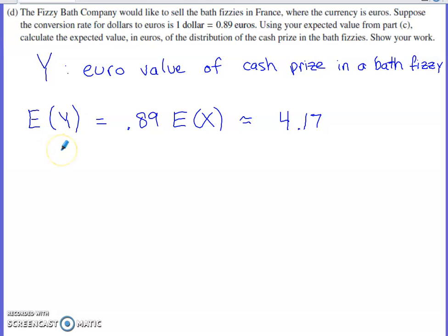What's the expected value of Y? Well, the way that we go from X to Y is we multiply X, the dollar amount, by 0.89 in order to perform that conversion. Whenever you have an expected value for one random variable and you're transforming it through the operation of multiplication, all you're going to do is multiply that original expected value. So that answer from part C, $4.68, multiply that by 0.89, and you get the euro value of a cash prize, the expected value in euros of a cash prize in the bath fizzies.